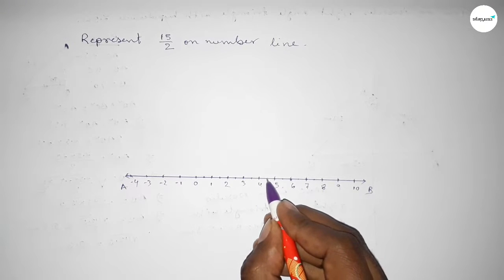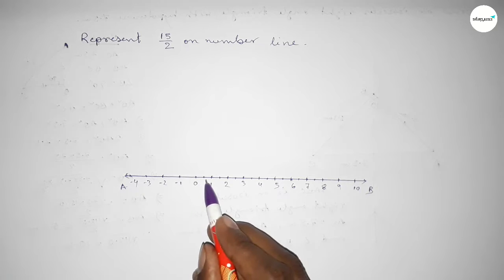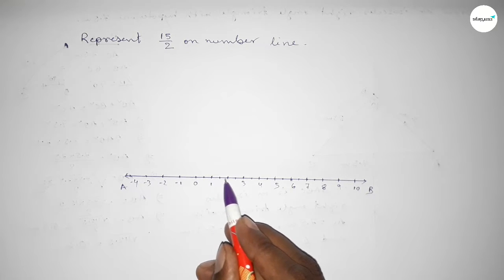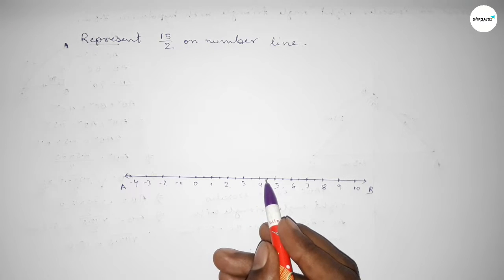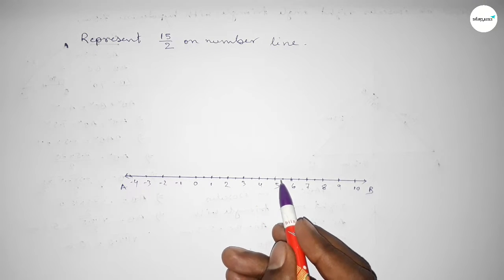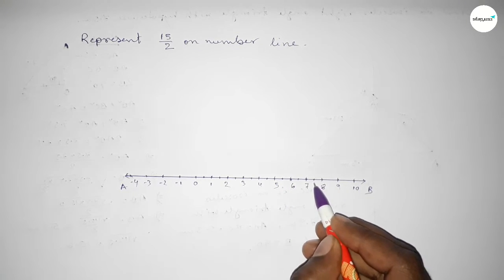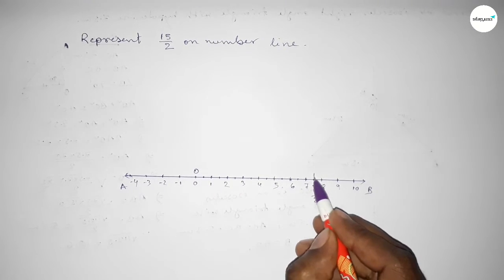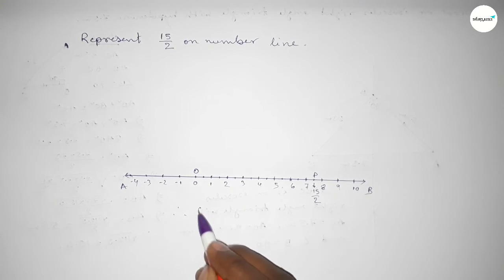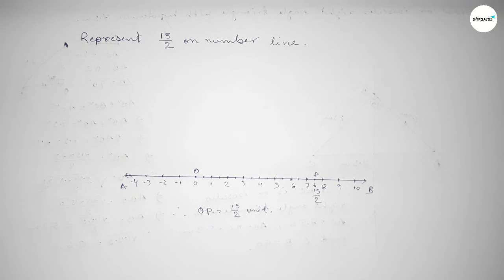Marking the half of each number clearly to understand perfectly. So this is one over two, two over two, three over two, four over two, five over two, six over two, seven over two, eight over two, nine over two, ten over two, eleven over two, twelve over two, thirteen over two, fourteen over two, and this is fifteen over two. That's all — thanks for watching, please share it with your friends.